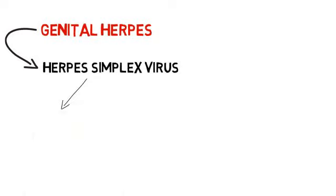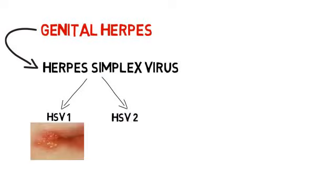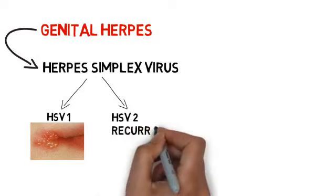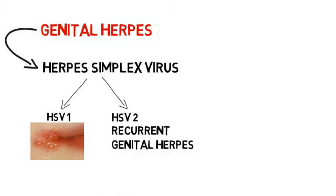Herpes simplex virus has two serotypes: one and two. HSV-1 is most commonly associated with oral lesions, also known as cold sores, and accounts for 30% of genital herpes. HSV-2 causes 70% of primary genital herpes and 95% of recurrent genital herpes. The virus enters the body through mucosa or micro-abrasions in the skin and follows the sensory nerves to the dorsal spinal ganglion.